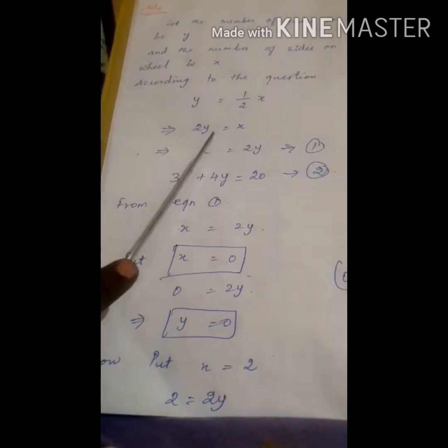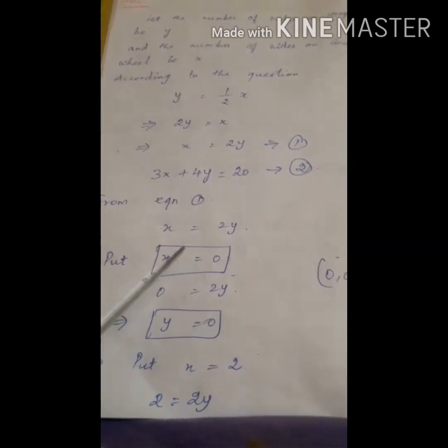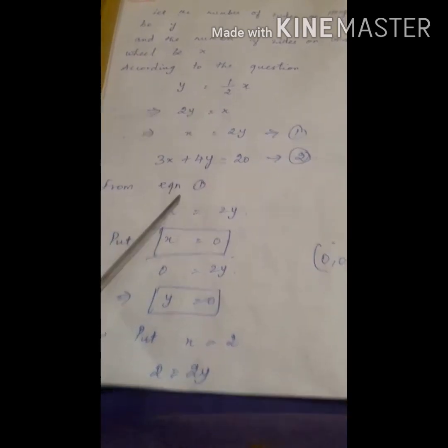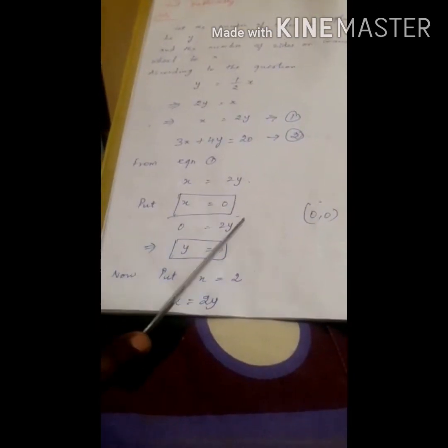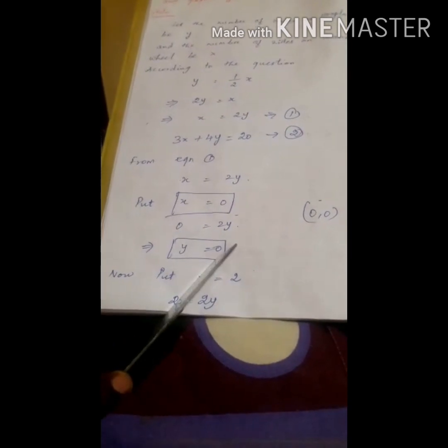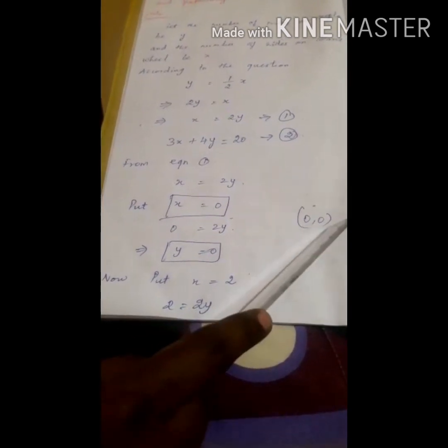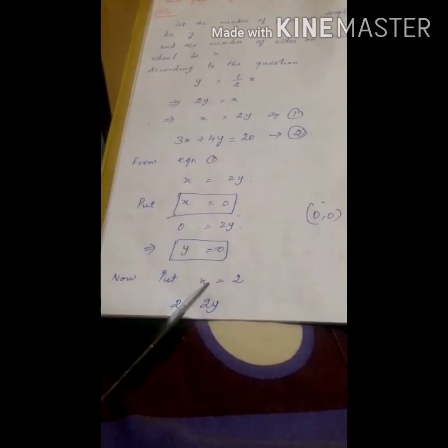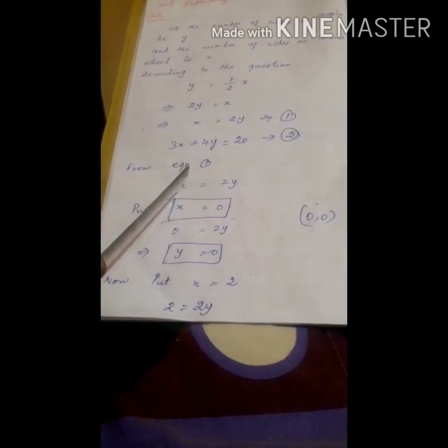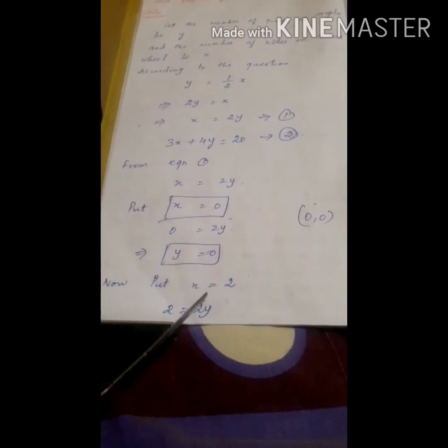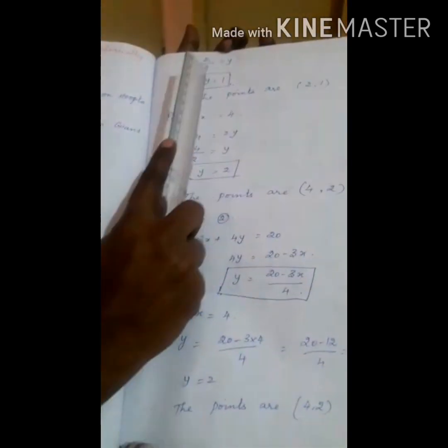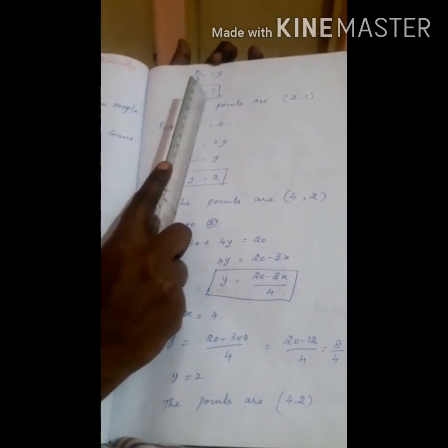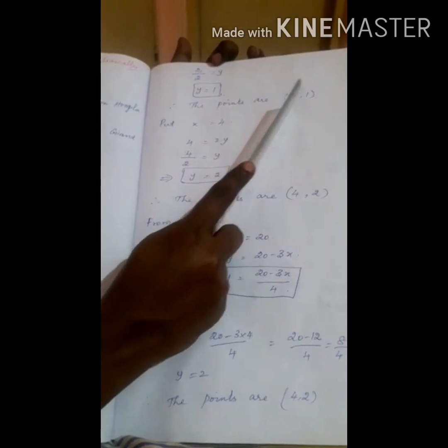Taking Equation 1: x equal to 2y. Put x equal to 0, so 0 equal to 2y, therefore y equal to 0. The point is (0, 0). Now put x equal to 2, so 2 is equal to 2y. Transposing, this 2 comes as division, therefore y is equal to 2 by 2, which equals 1. That is y equal to 1. Therefore the points are (2, 1).